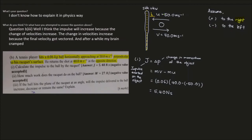What does it mean that the impulse points to the right? It means the impulse is changing the initial momentum — which is pointing to the left — into the final momentum, which points to the right. If you want to change something initially pointing left to pointing right, you have to exert an impulse to the right. If you wanted to increase the momentum to the left, you would exert an impulse to the left.